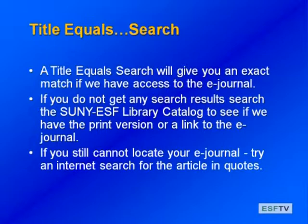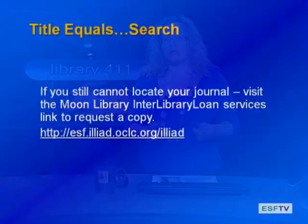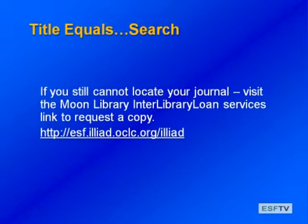If you're not finding your title in the e-journals database after trying an exact title search, you could go back and check the library catalog to see if we have the print version or an e-journal link there. If you still can't find your e-journal, try searching the internet for the article you want in quotes — sometimes you can find it in another database or on the author's page. If all else fails, you can use our interlibrary loan services: visit our ILL website, tell us what article you're looking for, and most often libraries will scan the article and email it directly to you.